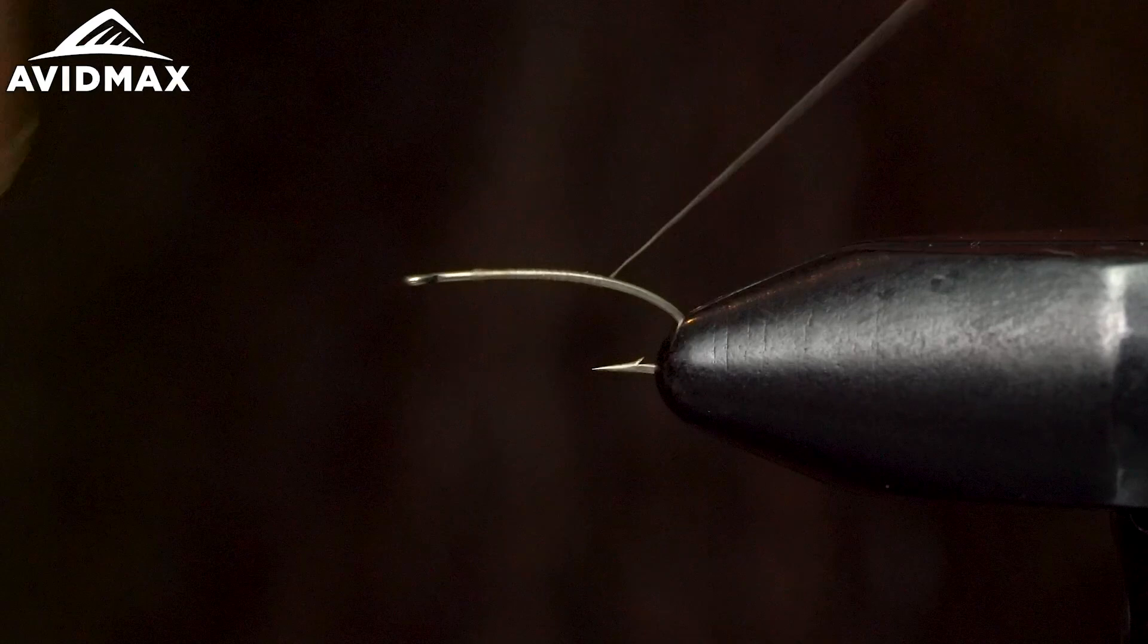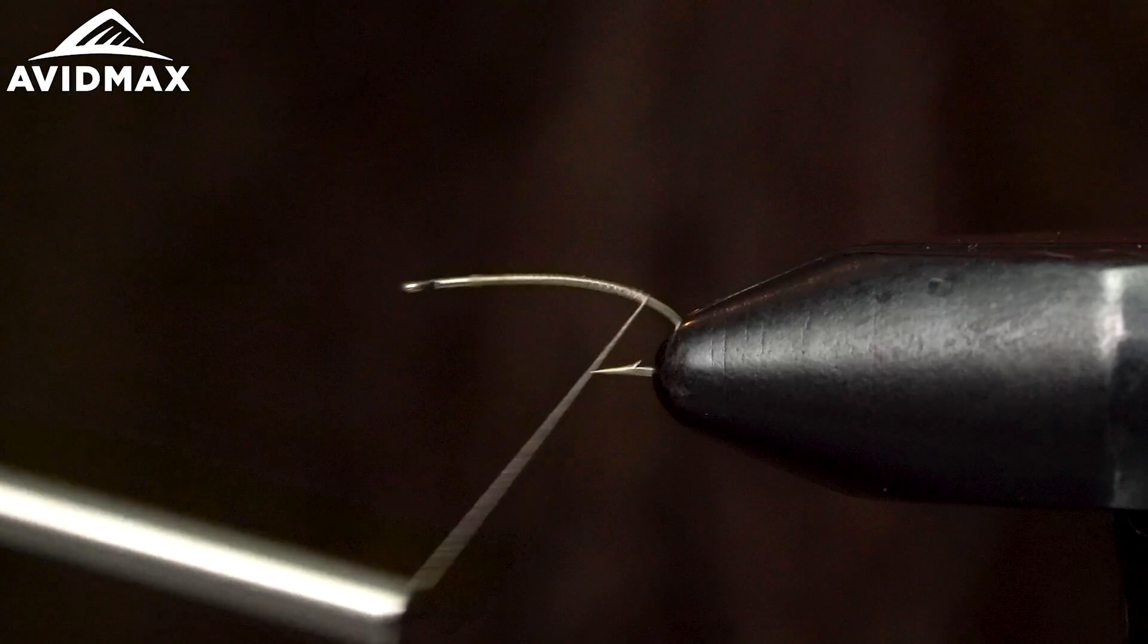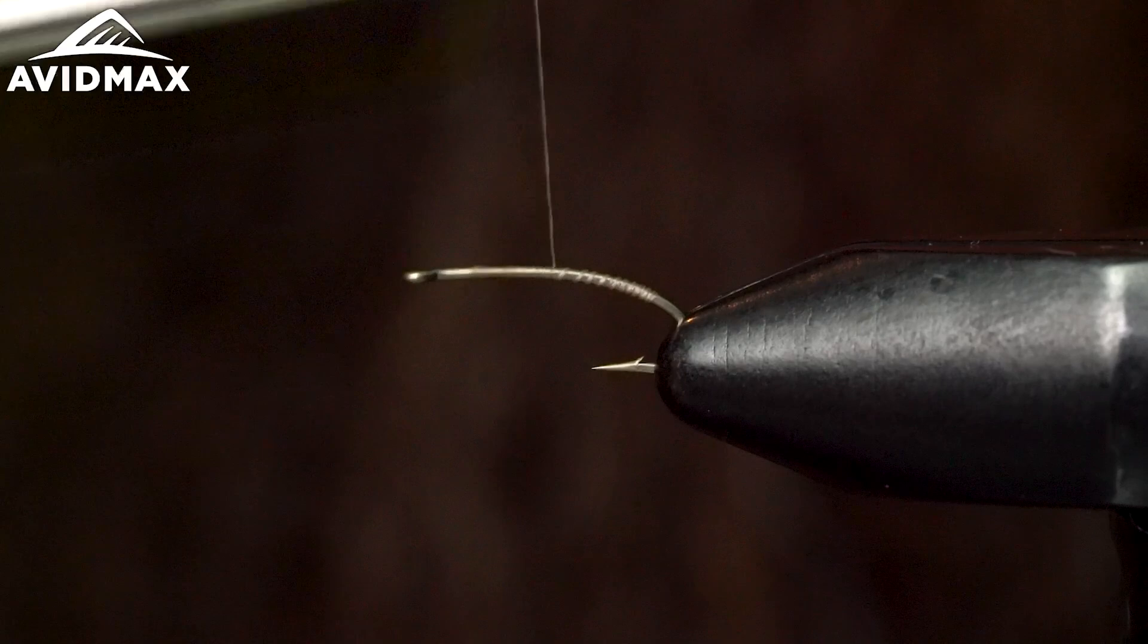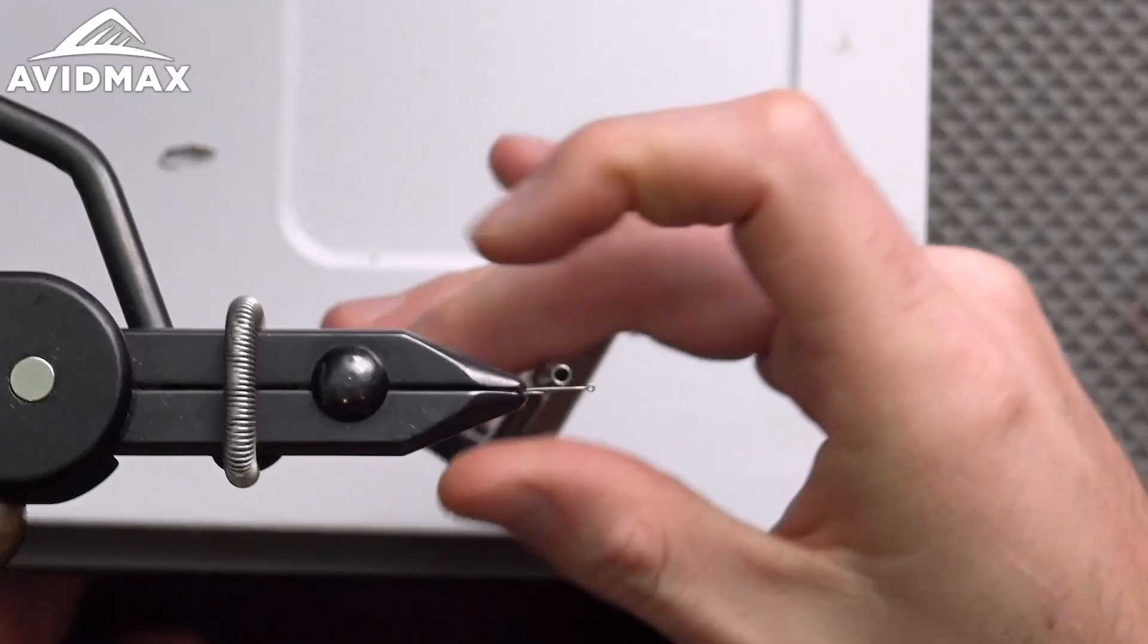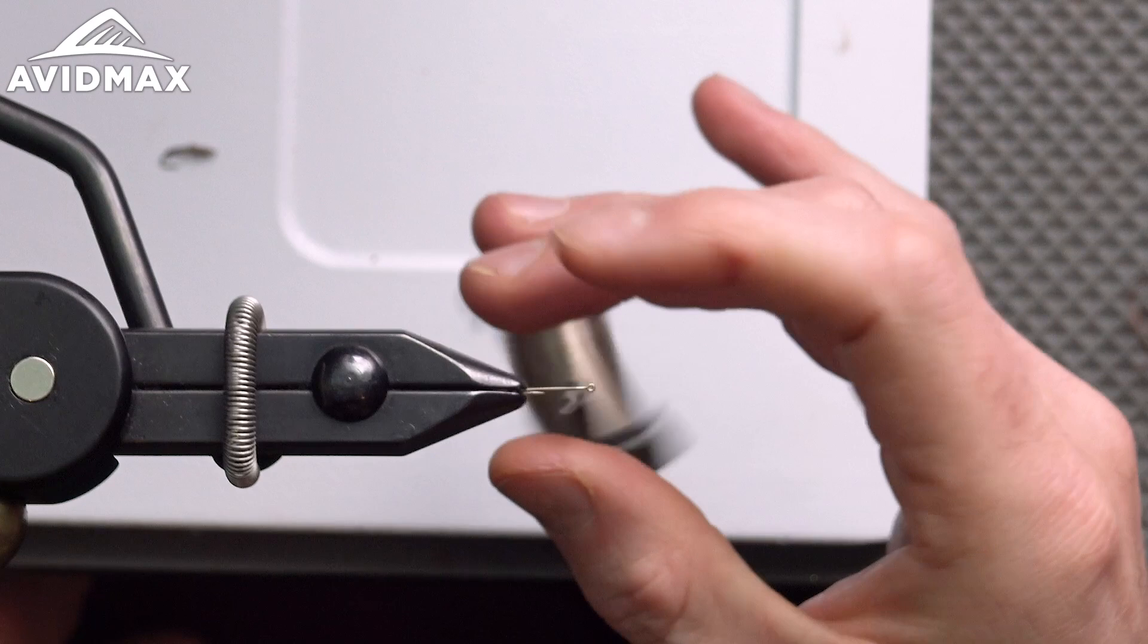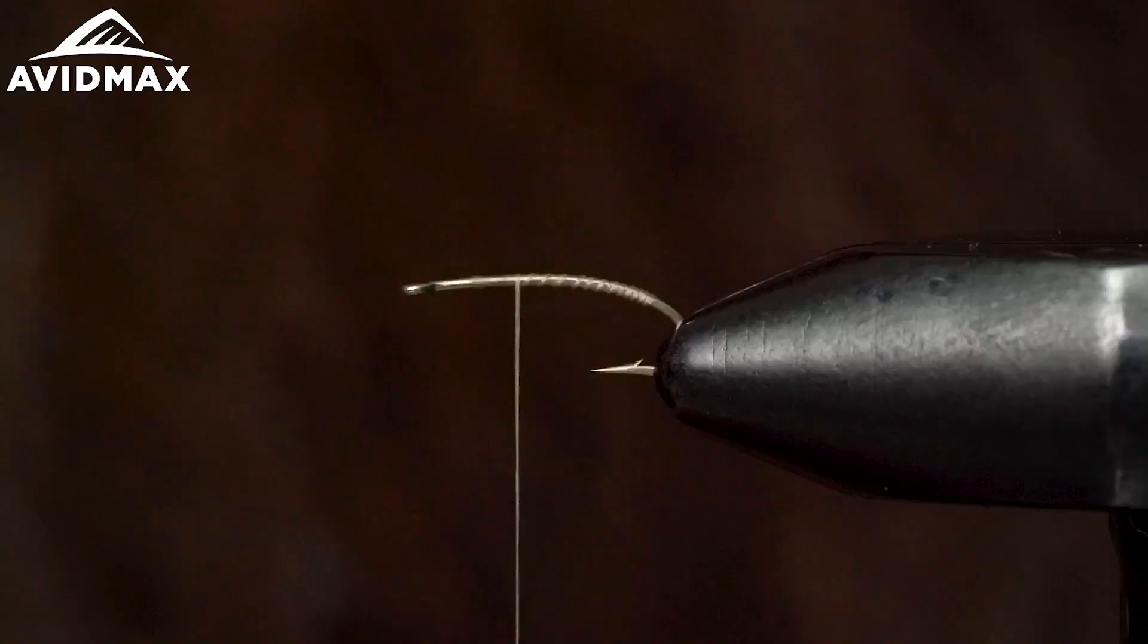And we're just going to make a little thread body here. Work back to about where the barb is. I'm going to keep flattening my thread out. So I'm going to be making counterclockwise turns, keep flattening that thread out as I go along here.